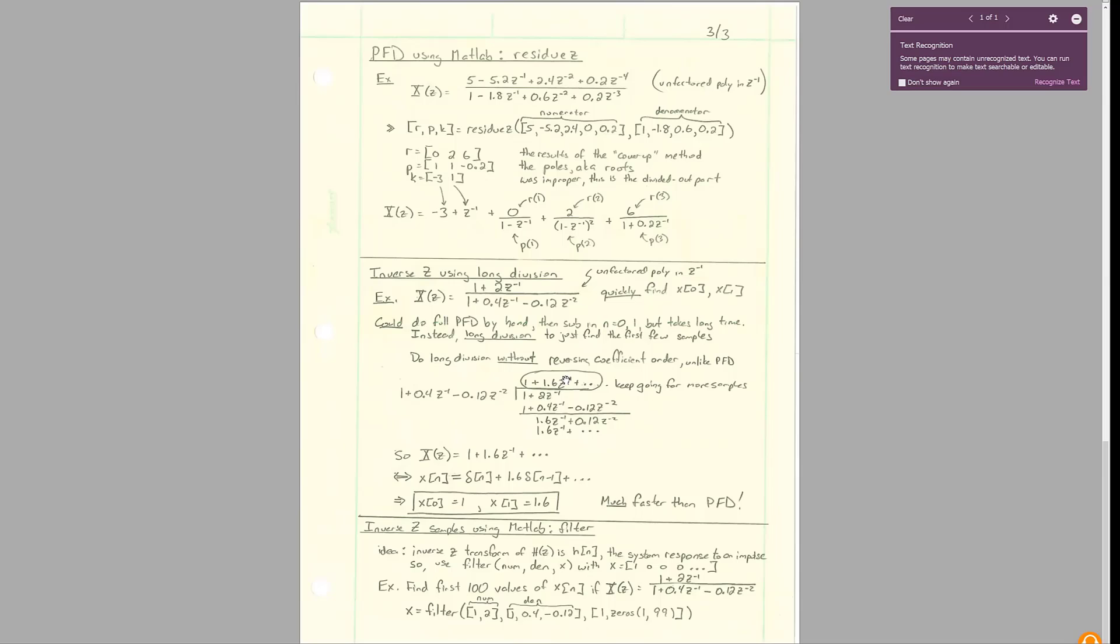If that's true, if you were to continue to do this forever, you'd end up with a really long answer up here. And then you can directly take the inverse z transform just by inspection. One goes to an impulse, 1.6 goes to a delayed impulse. Whatever coefficient is times z to the negative two goes to an impulse at n negative two.